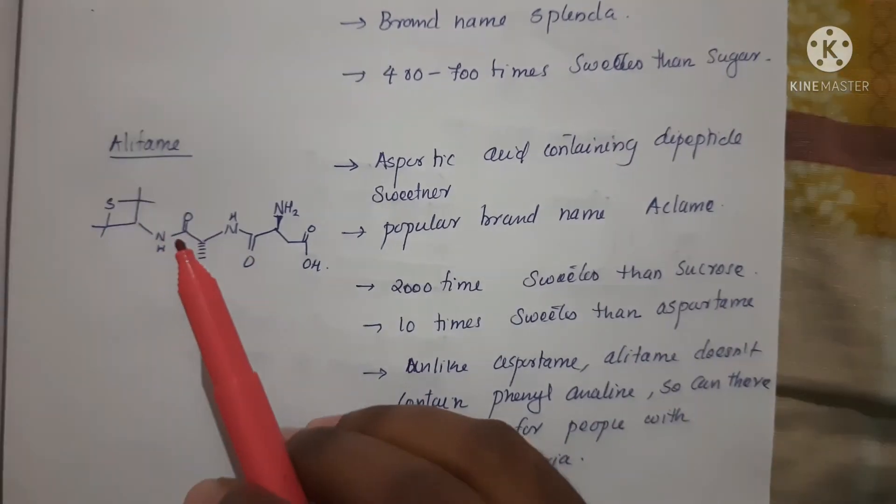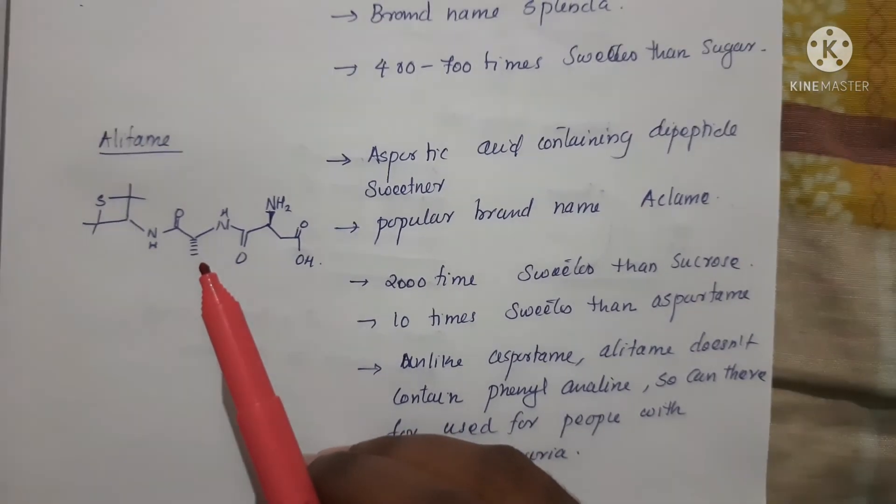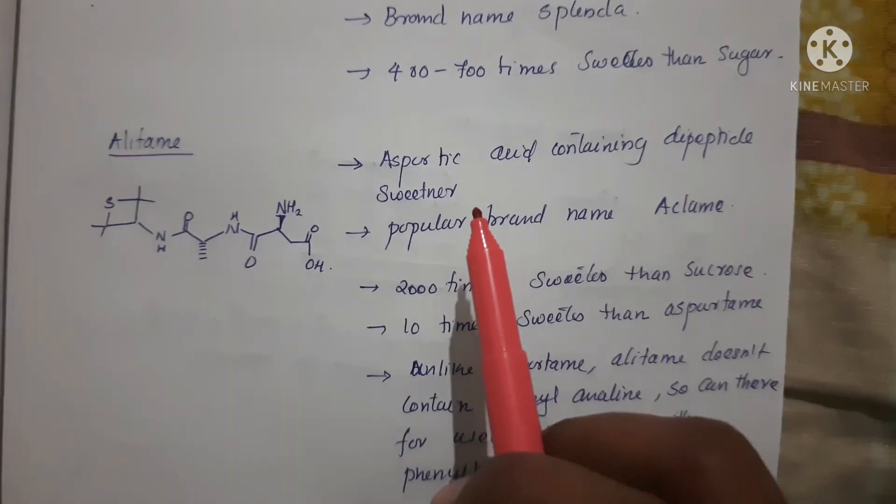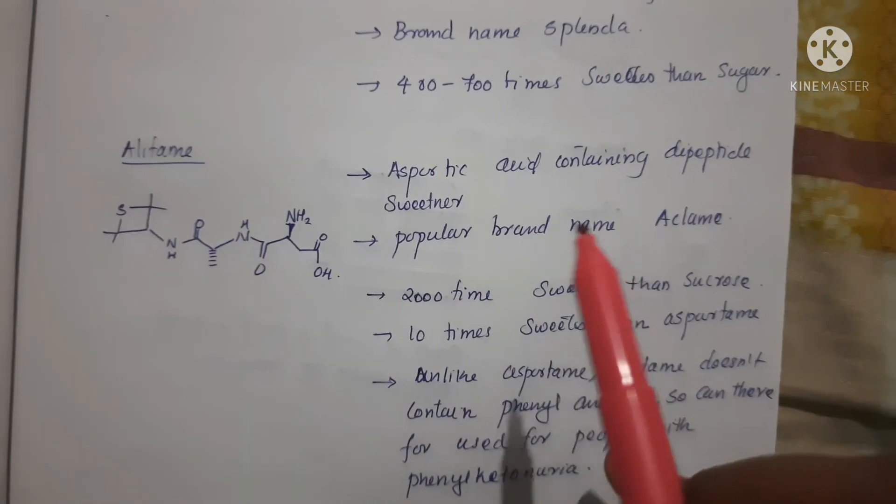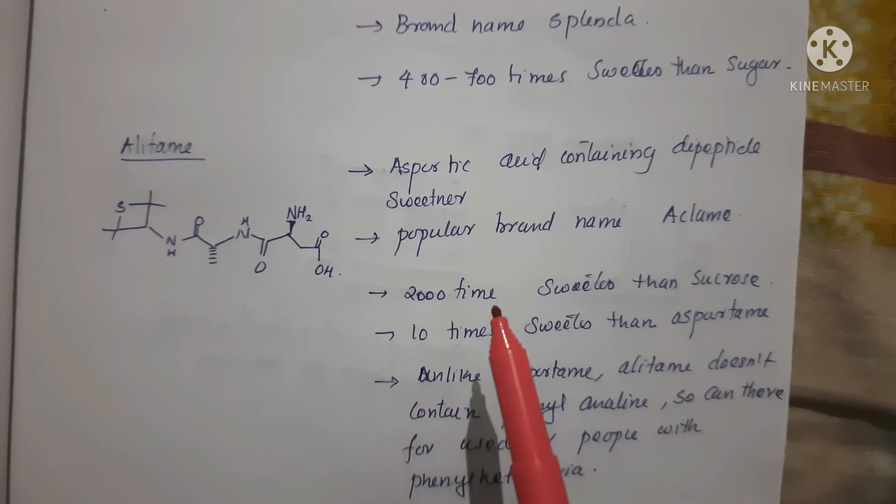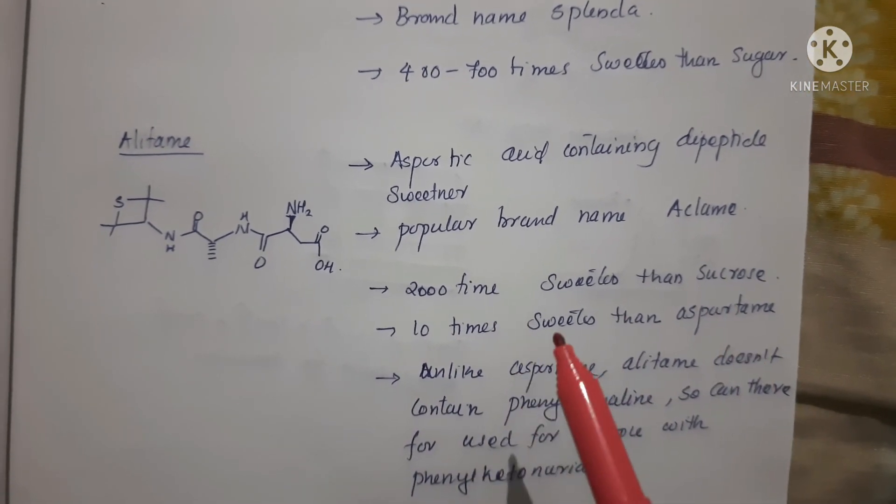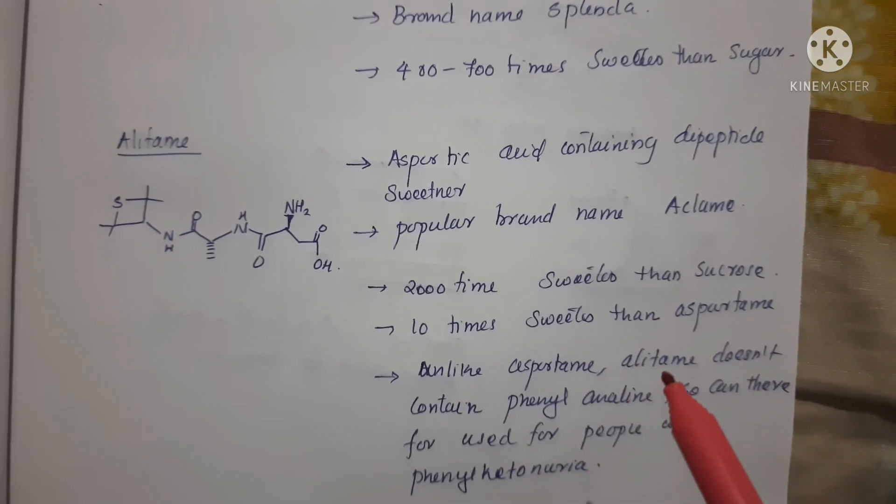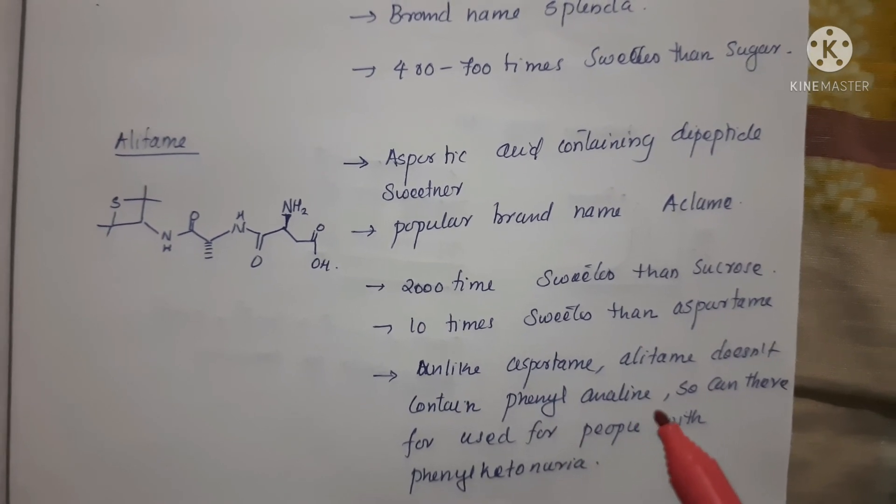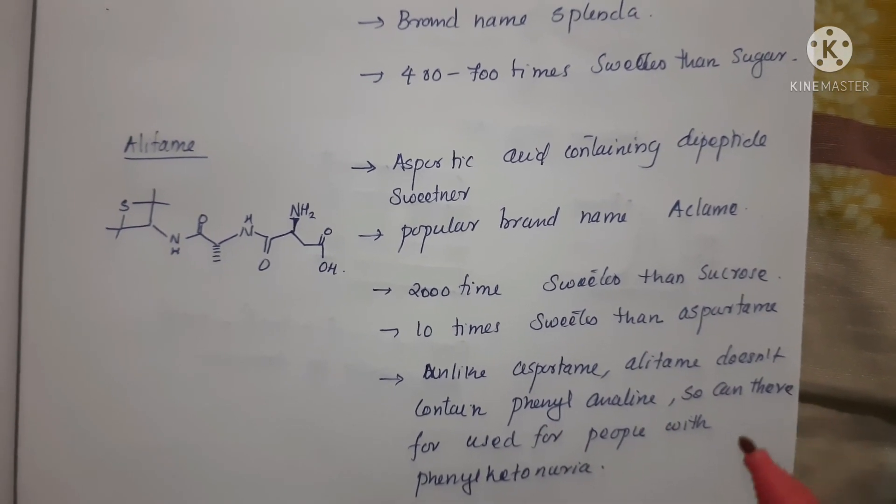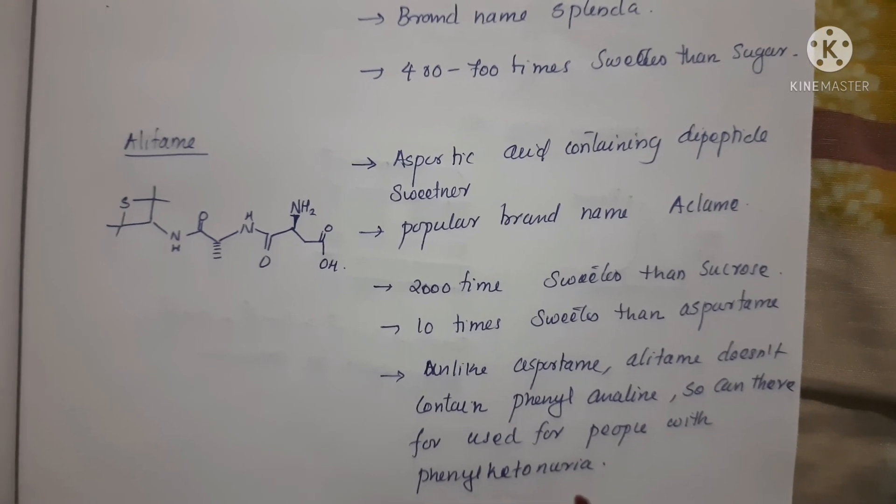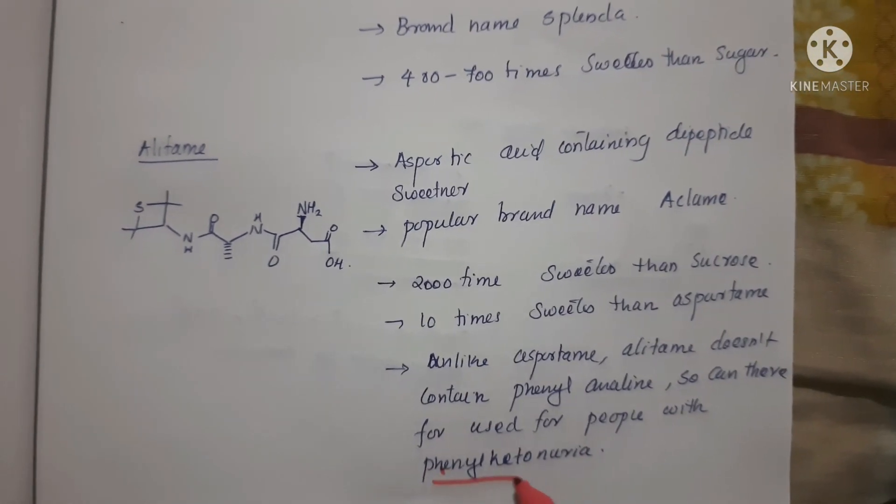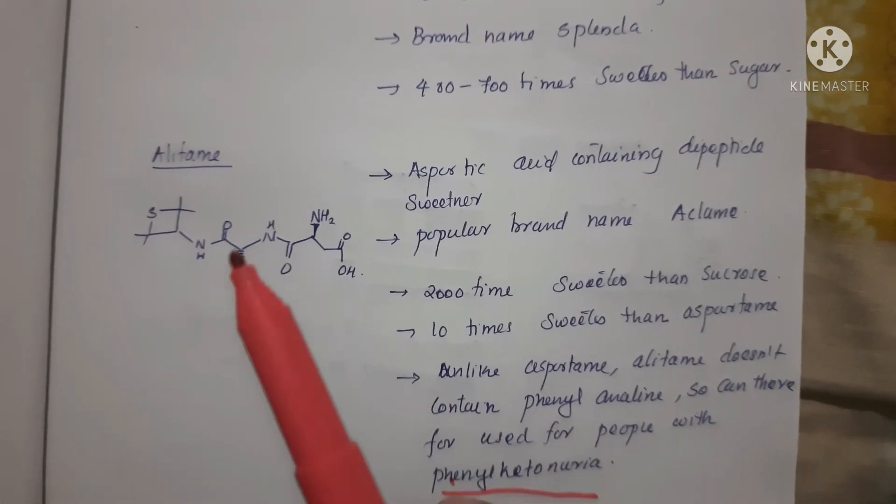Here is alitame. The structure of alitame is here. It's an aspartic acid containing dipeptide sweetener. Popular brand name is Clean. It's 2000 times sweeter than sucrose and 10 times sweeter than aspartame. Unlike aspartame, alitame does not contain phenylalanine, so this can be used for people with phenylketonuria. It's an important point - phenylketonuria is connected with alitame.